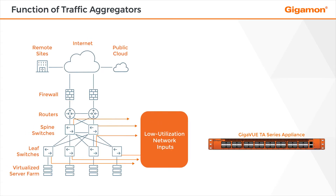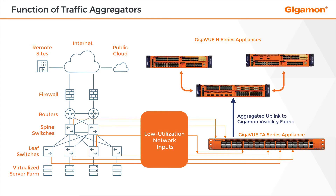Gigaview TA Series nodes aggregate traffic from multiple low-utilization links before sending it to Gigaview H-Series appliances. The Gigaview TA Series supports all standard Gigaview OS Network Packet Broker or NPB aggregation filtering and forwarding features. Packets originating from Gigaview TA devices can be further prepared using the Gigaview H-Series GigaSmart Traffic Intelligence features to make them easier for processing by tools.